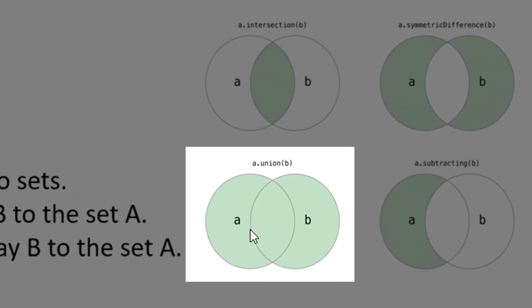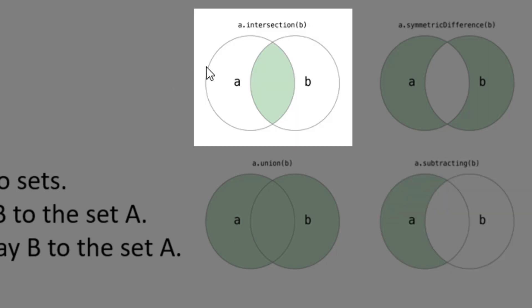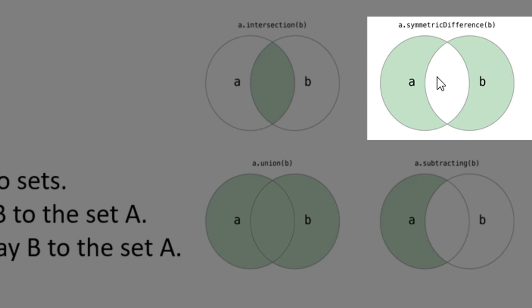Now let's discuss some operations of sets. Union will return all elements whether from set A or set B. Subtraction, like A minus B, means return all elements from A except those that are in B. Intersection returns the common elements present in both sets. Symmetric difference returns all elements from A and B except the common ones, i.e., the intersection.